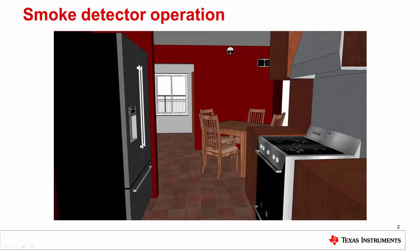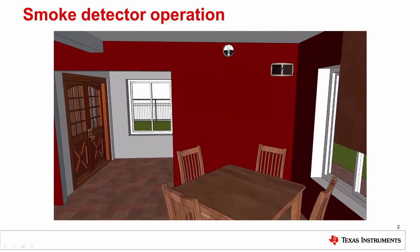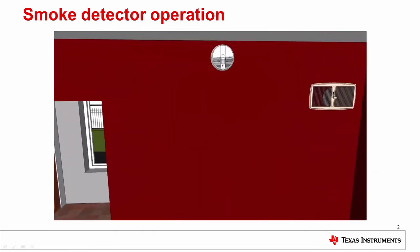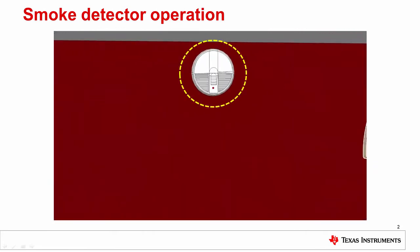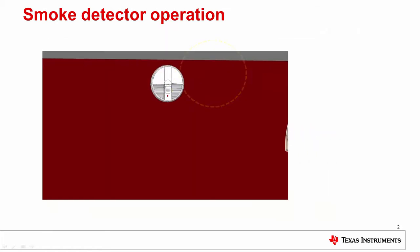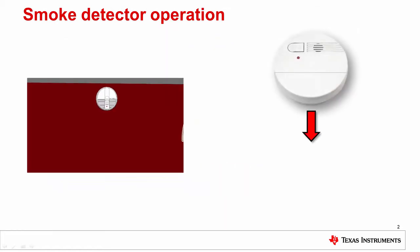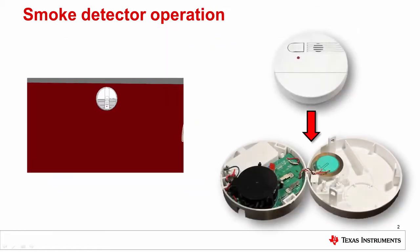Smoke detectors are commonly found in homes and commercial buildings. These devices are integral to the safety of people in enclosed spaces, yet are typically only thought about when they are sounding an alarm or when chirping due to a low battery condition. Opening up a typical smoke detector, we can gain insight to the operation by first identifying its key components.